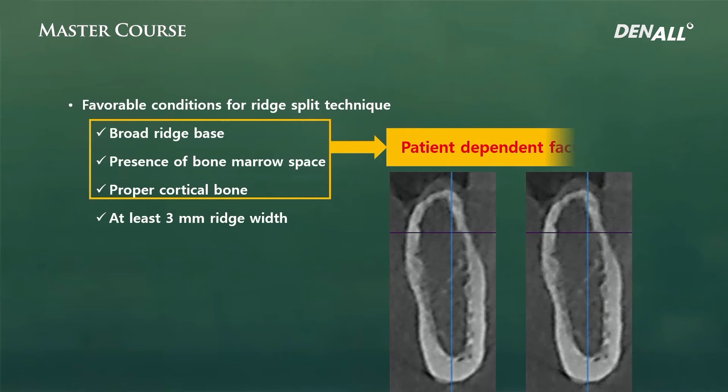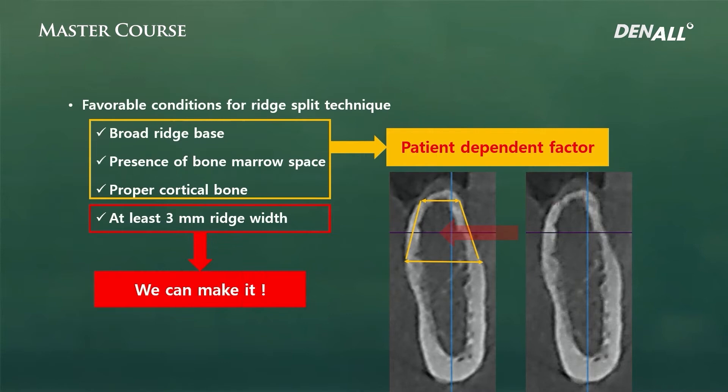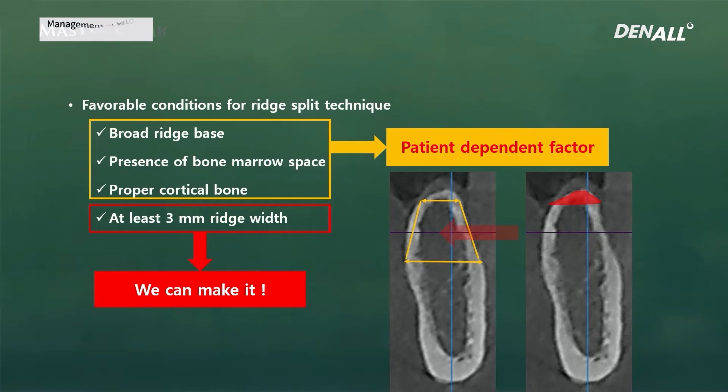The first three factors — broad base, bone marrow space, and proper cortical bone — are patient-dependent and cannot be created by the surgeon. However, the 3 mm of ridge width can be achieved for the patient. If it is too thin, you can do alveoloplasty to achieve 3 mm of ridge width, under the precondition that vertical available bone is sufficient.